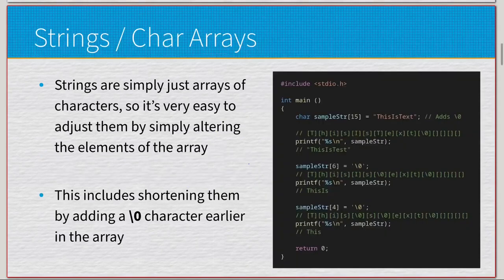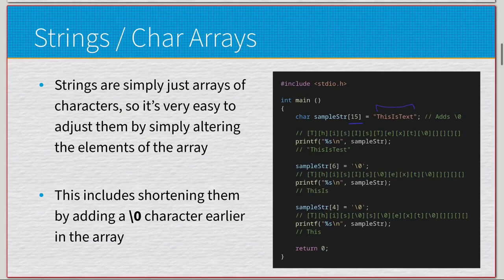Strings are just character arrays, so it's easy to adjust them by altering the elements inside the array — including shortening the string by adjusting where the null-terminating character is. Here on the right we have an example of creating a sample string of 15 characters: 'this is text'. The compiler automatically adds the null character, so you don't have to add it manually. You can see the null character goes right after the text, with four empty elements remaining.